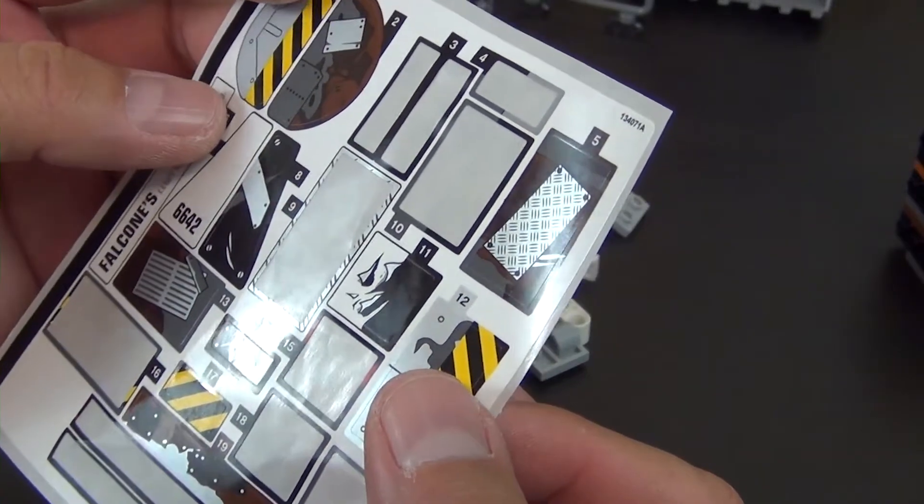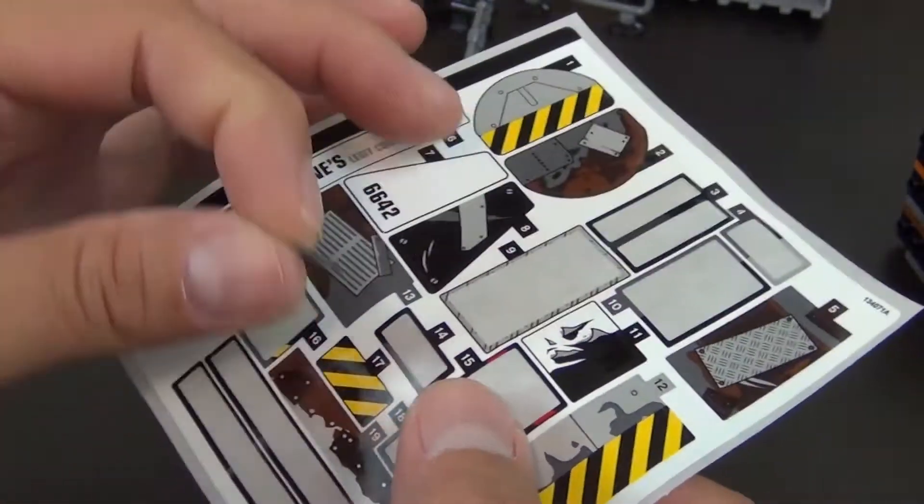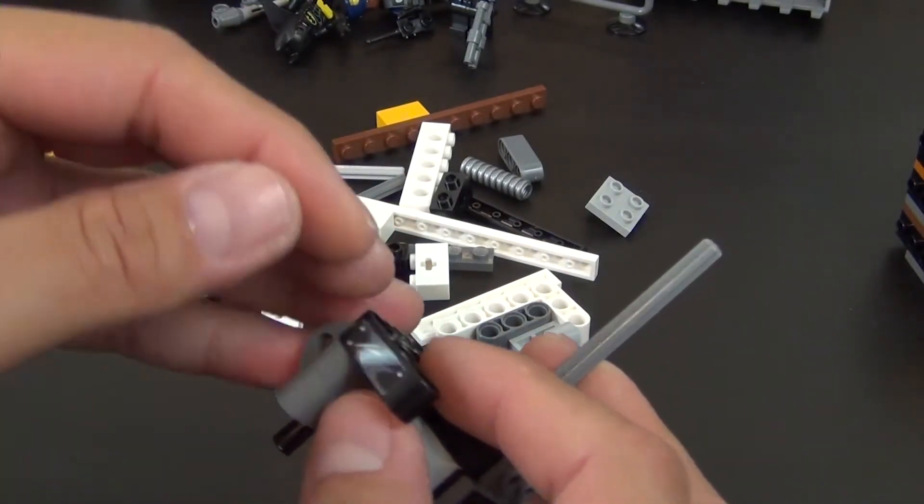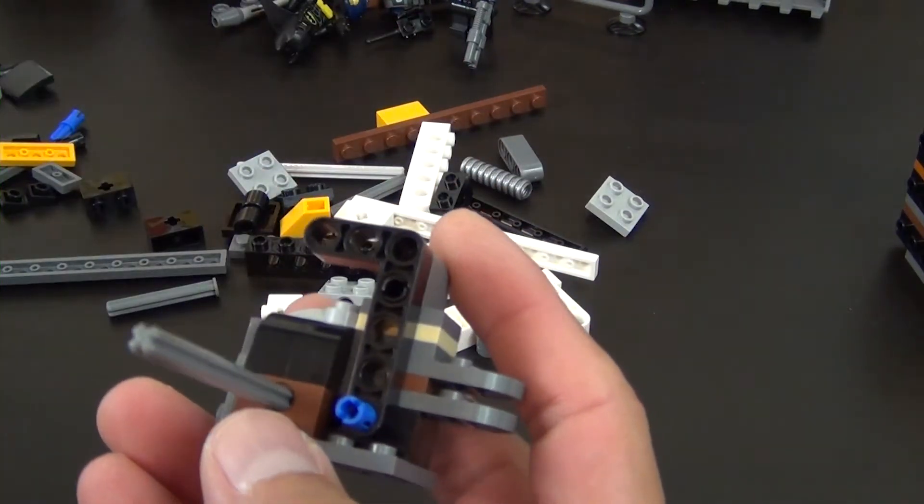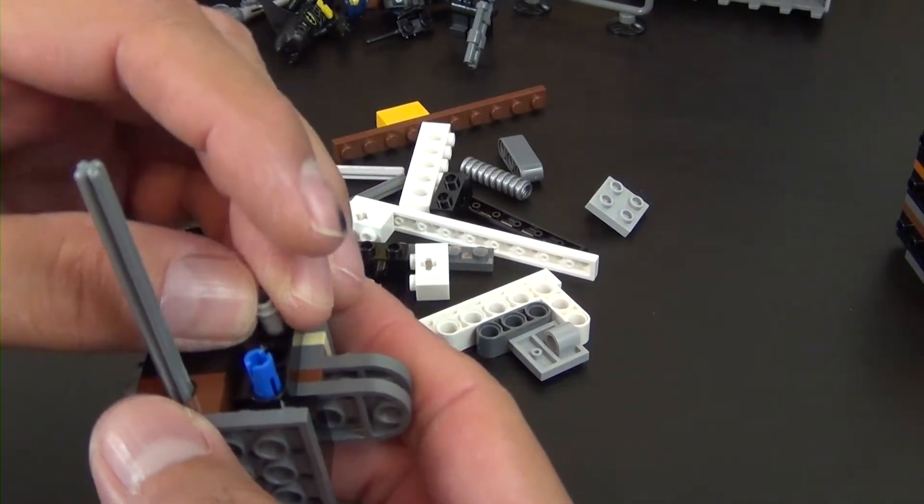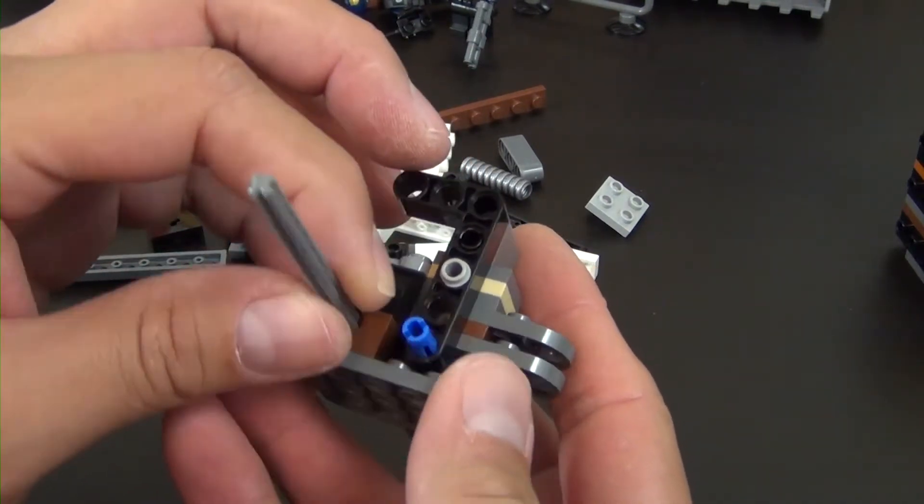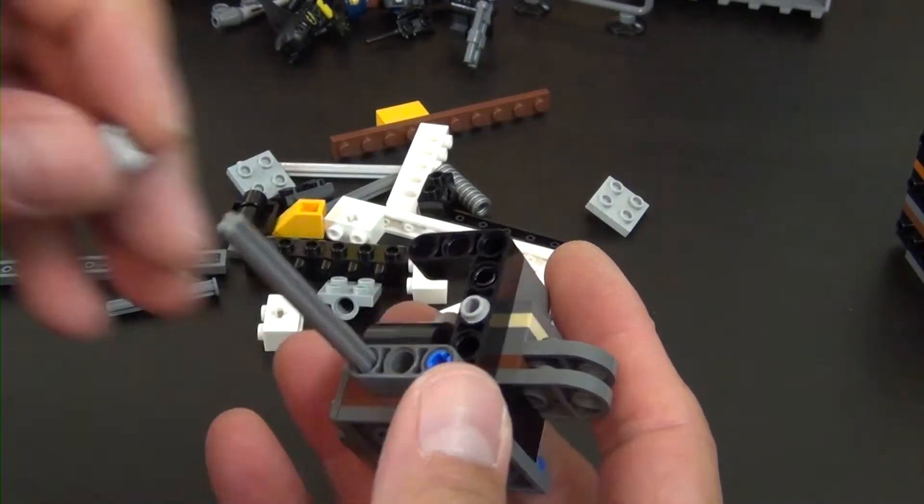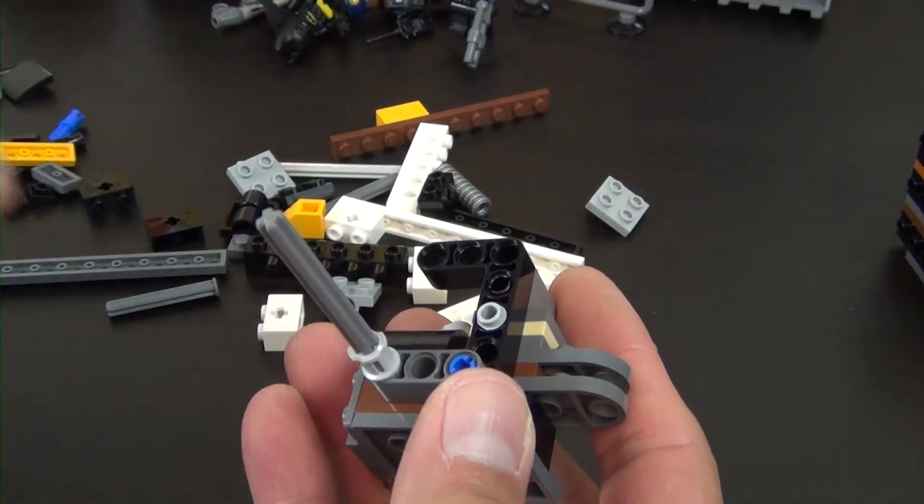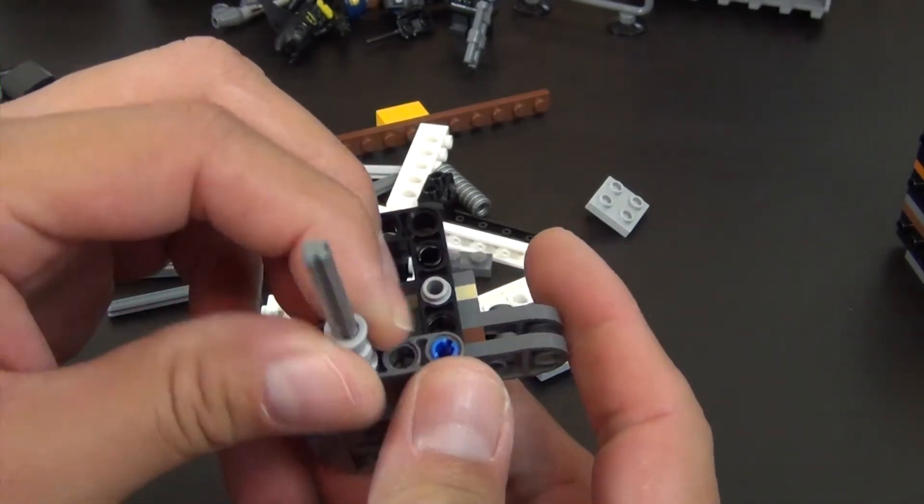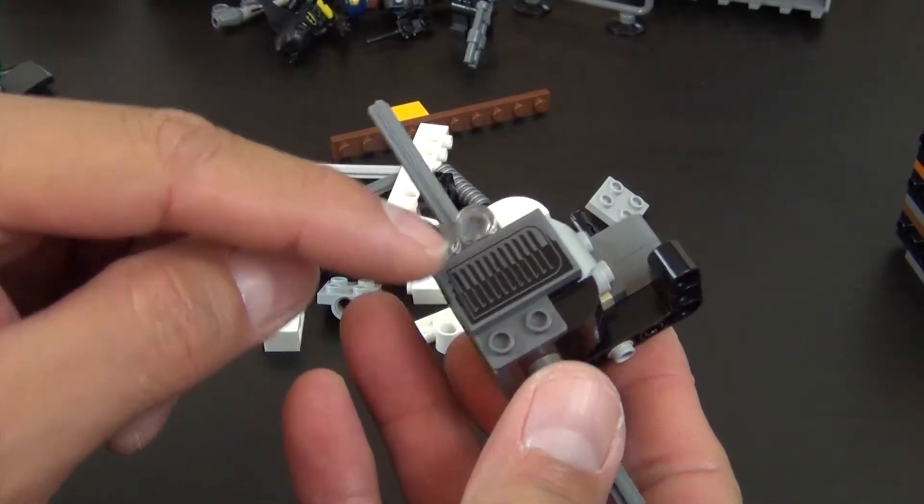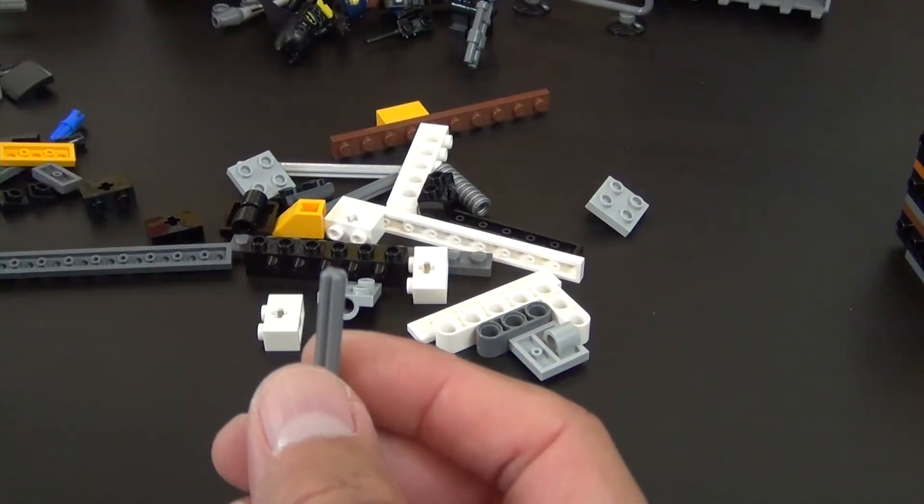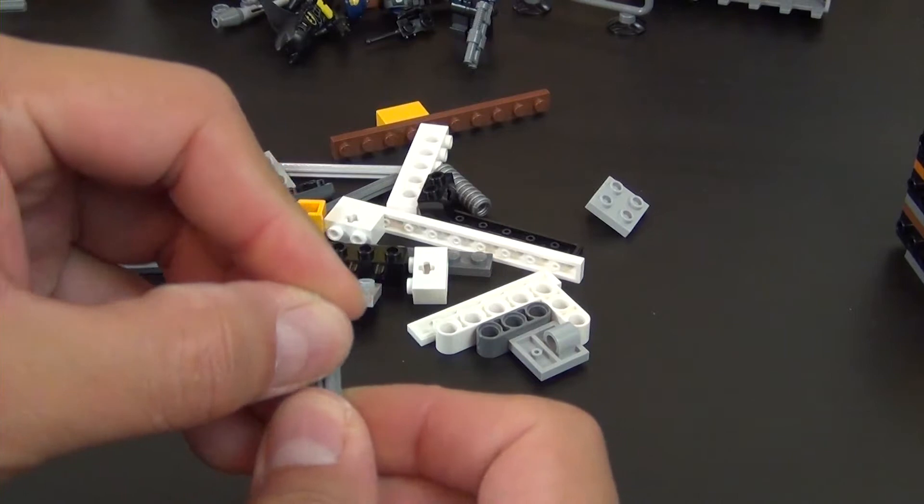Okay, so sticker number 14 - this is just going to go right here on the end. That piece goes there, that slides in. We have two technic bushings right there. So we have the lights over here but nothing over here. Not sure if we're gonna put something over there or not, but it seems to be that is intentional.